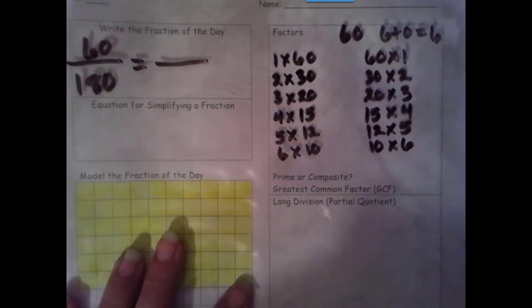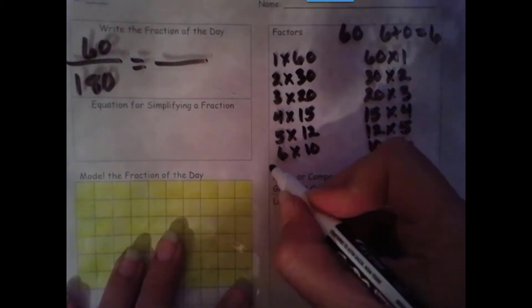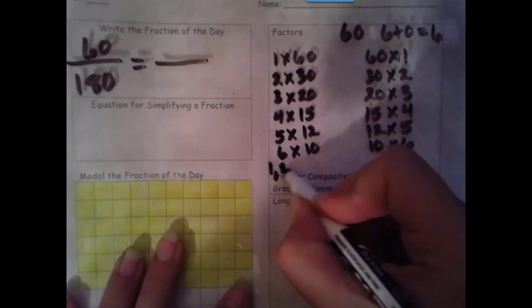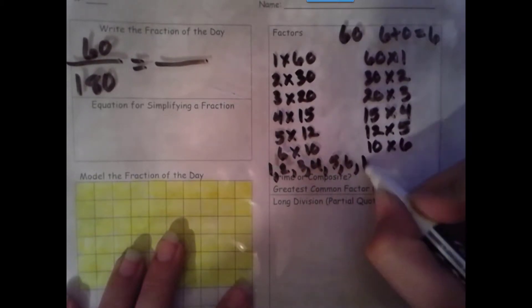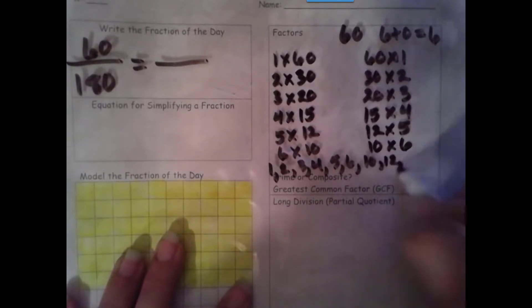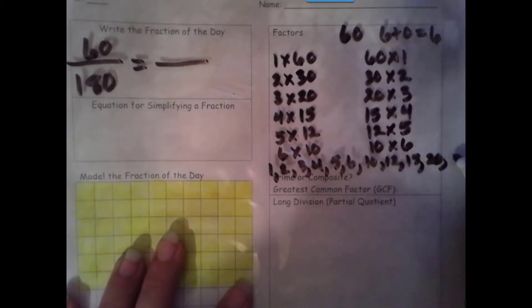Then we get to 10 and we are done. So let's list our factors from least to greatest: 1, 2, 3, 4, 5, 6, 10, 12, 15, 20, 30, 60.